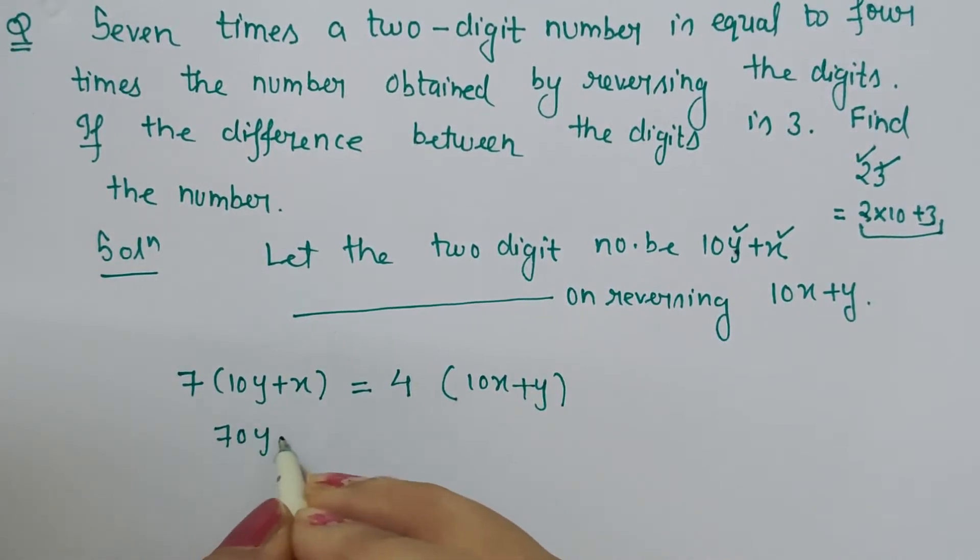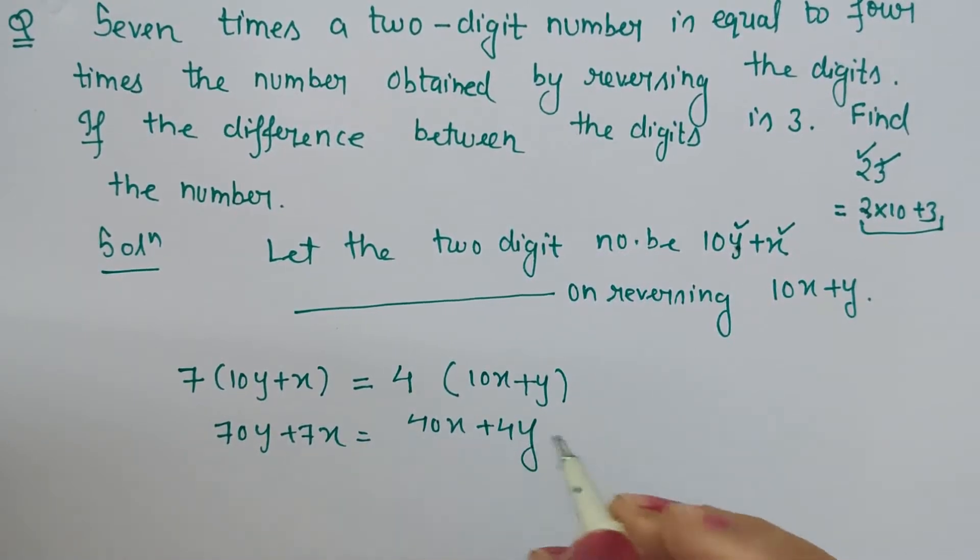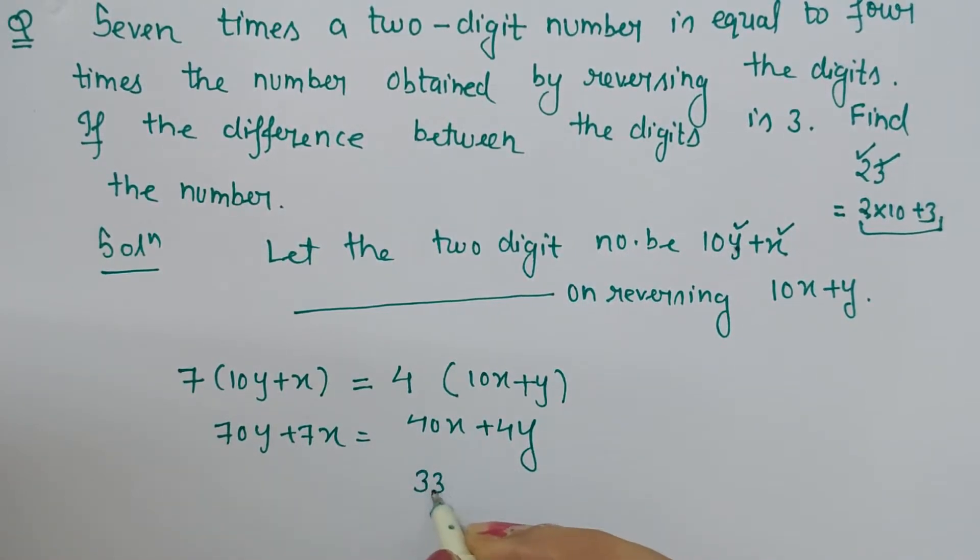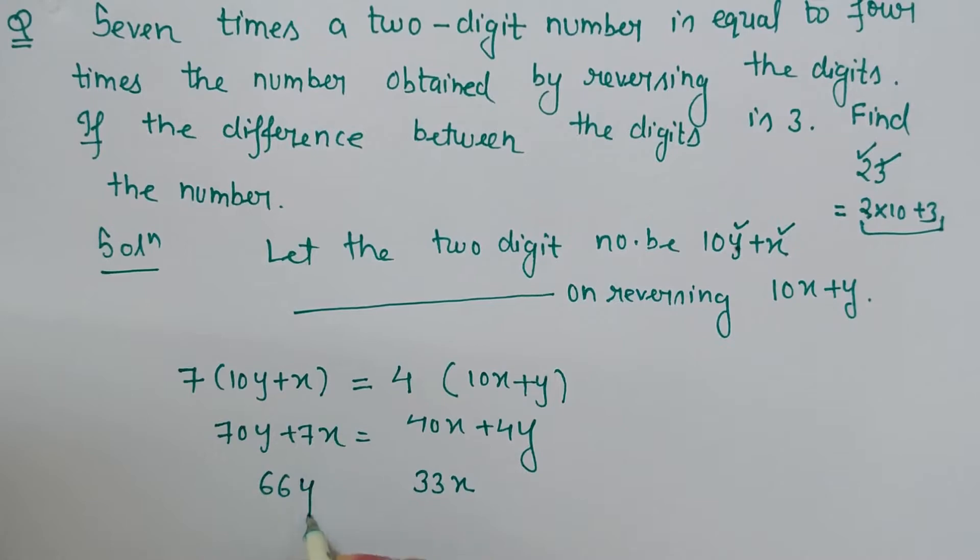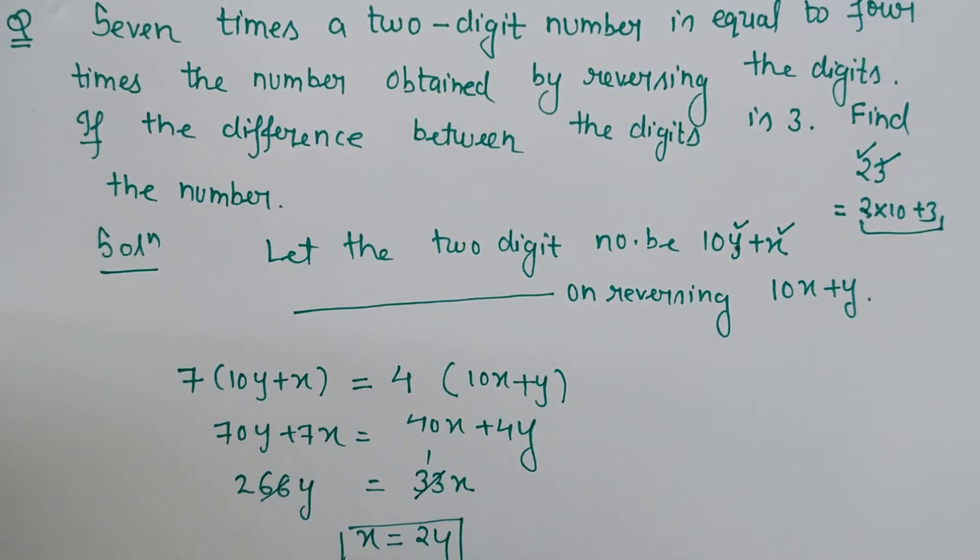Now just simplify it. It gives 70y plus 7x is equal to 40x plus 4y. Then just shift 7x to right hand side: 40 minus 7 is 33x. And shift 4y to the left hand side, so 70 minus 4 is 66y. Here 33 ones are 33, 2s are 66, so we got the relationship between x and y: x is twice of y.